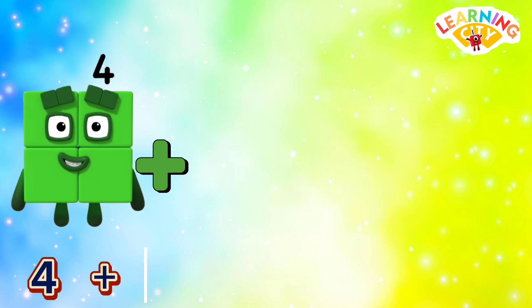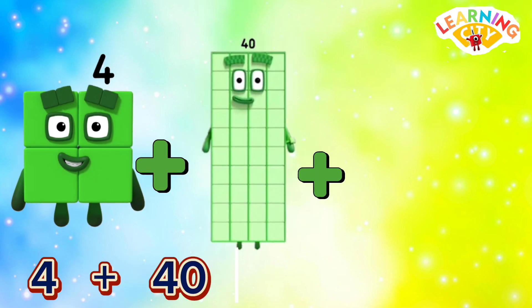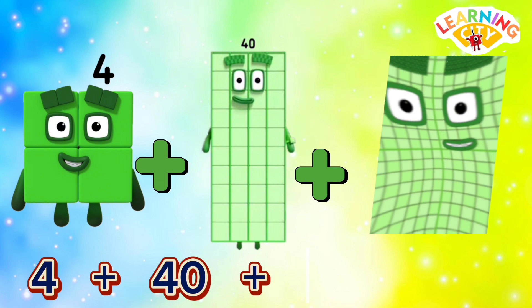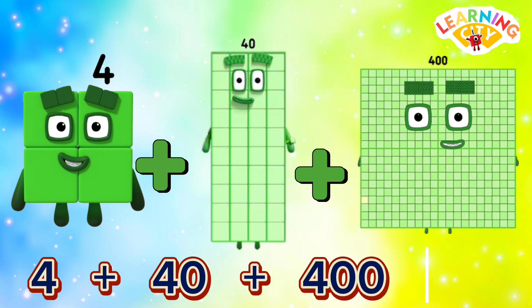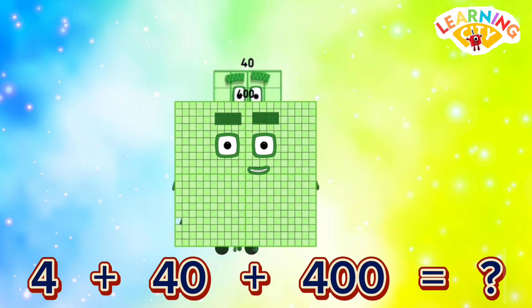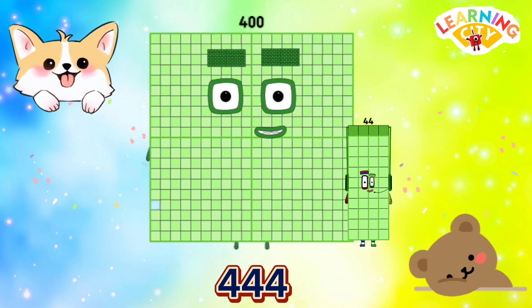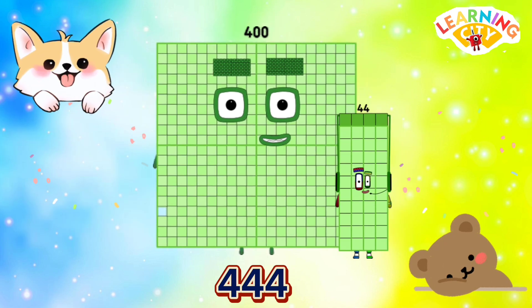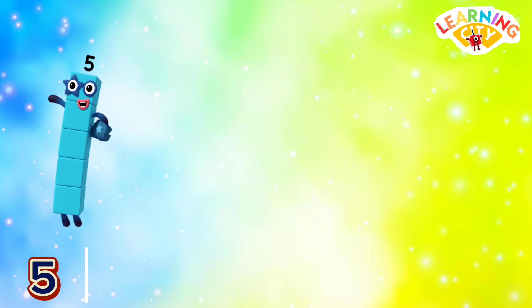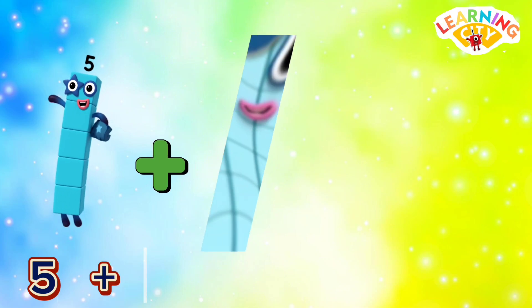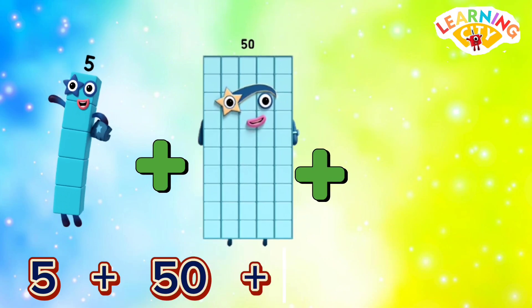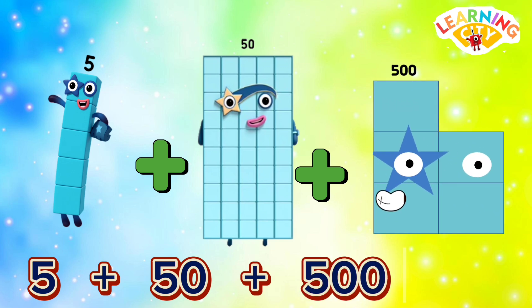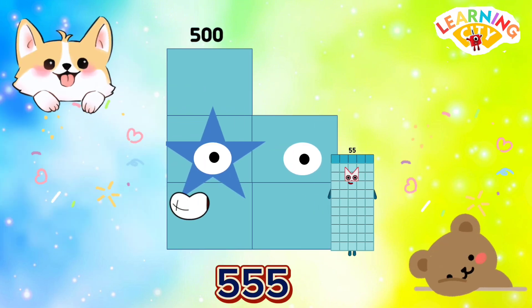4 plus 40 plus 400 is equals to 444. 5 plus 50 plus 500 is equals to 555.